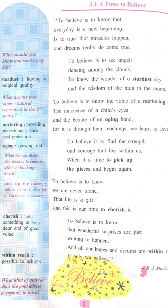Let's begin with stanza one: 'To believe is to know that every day is a new beginning, is to trust that miracles happen and dreams really do come true.' In the first stanza, the poet says that we must believe that each new day is a new beginning, and we should trust that miracles do happen and dreams do come true. We should have good dreams and believe they will be fulfilled, and work hard to achieve them.